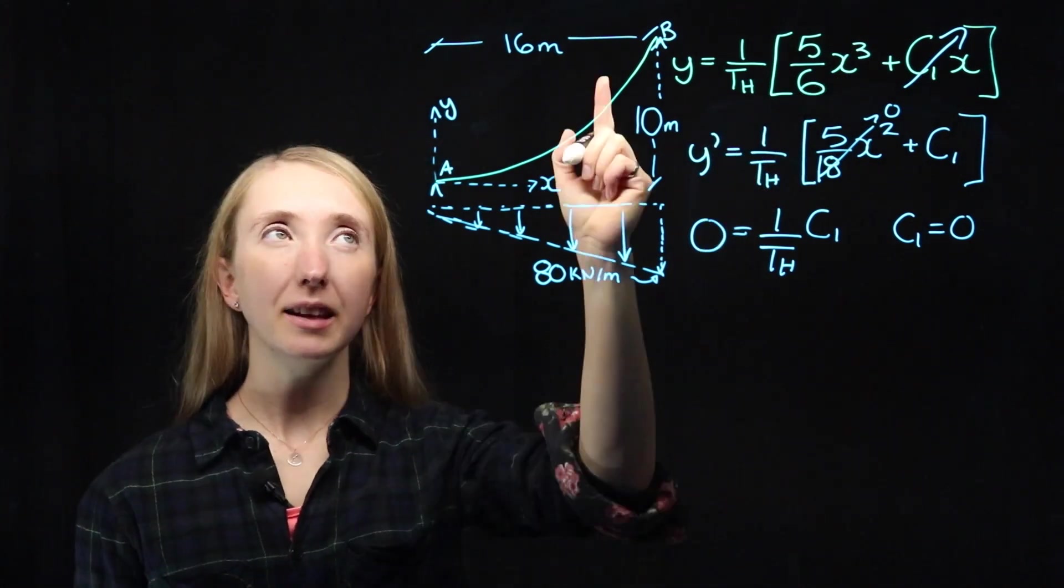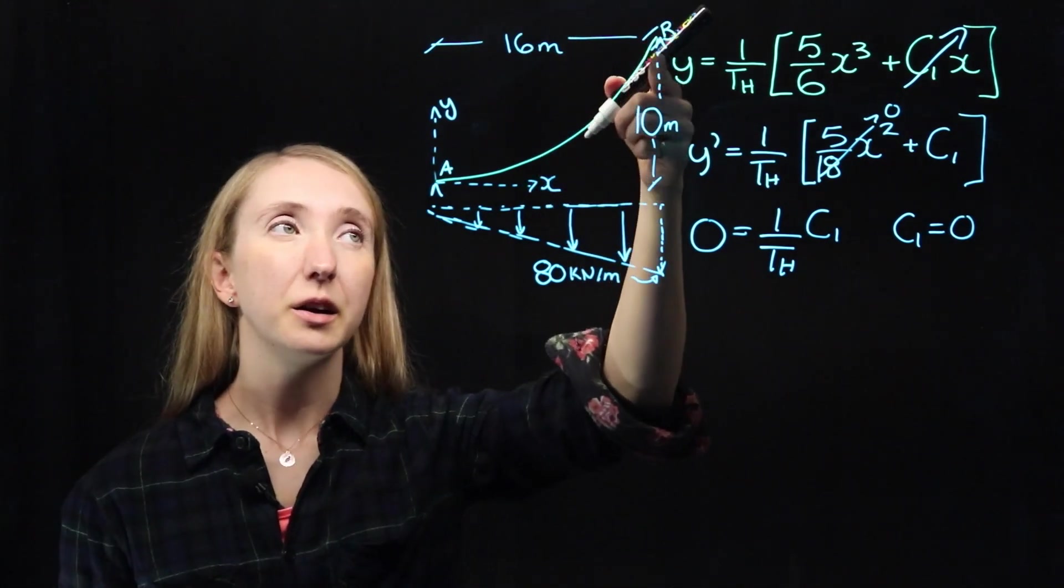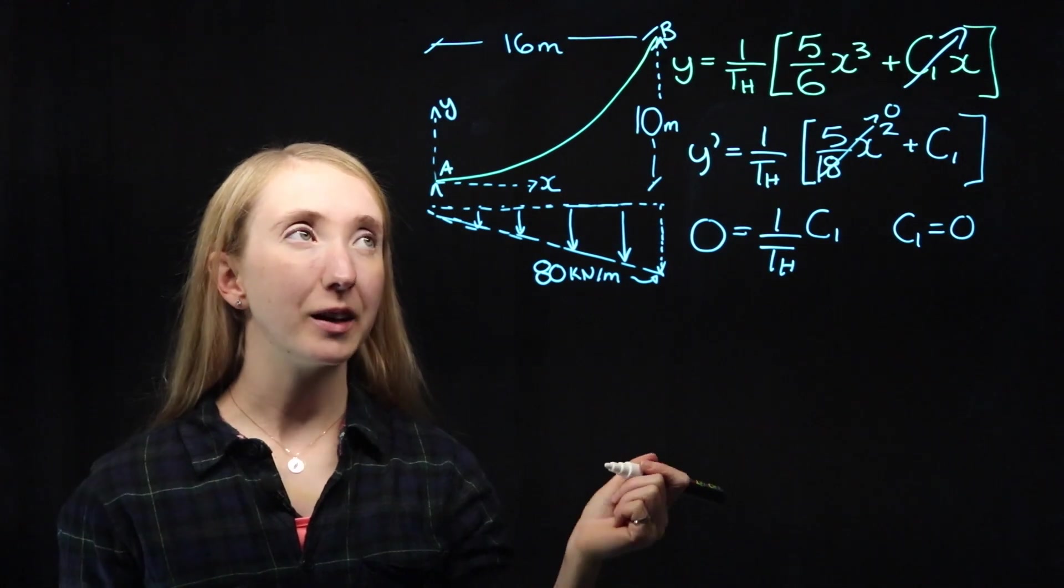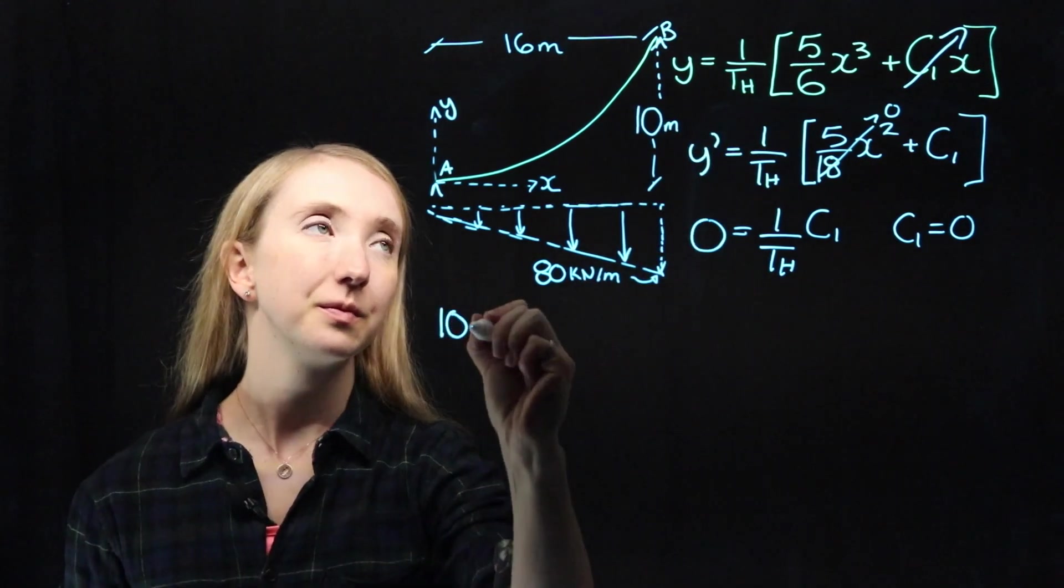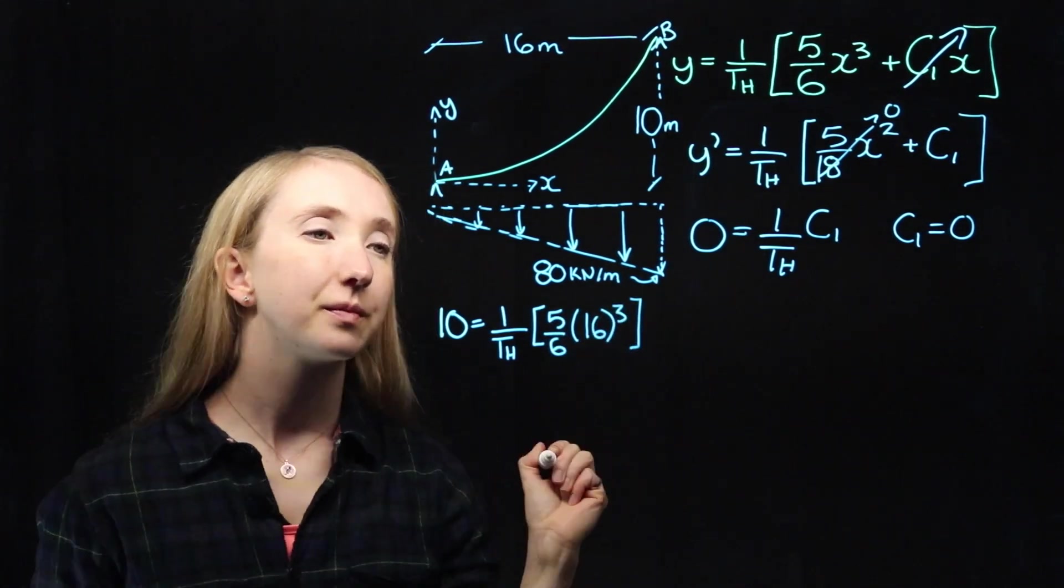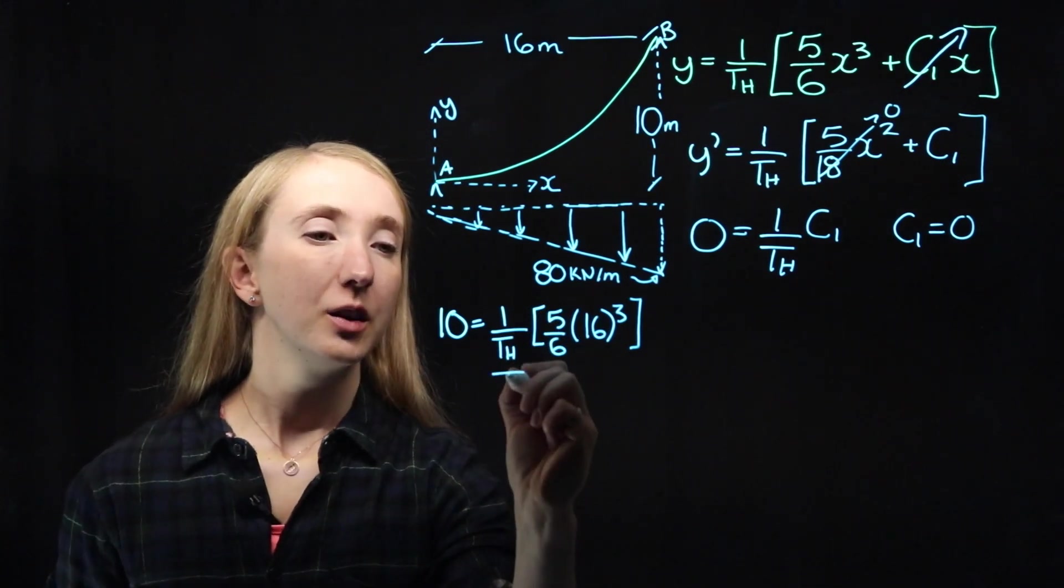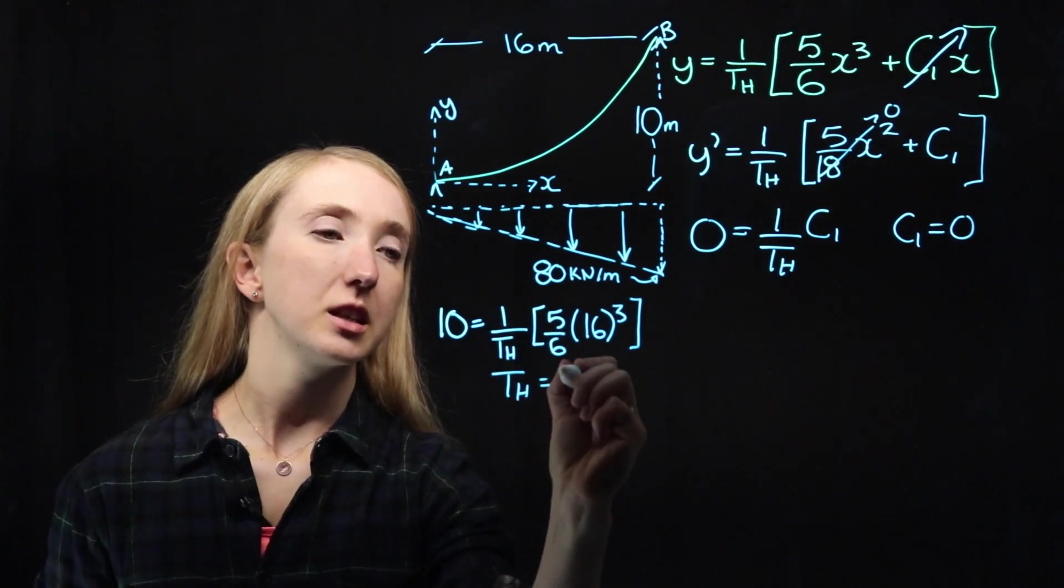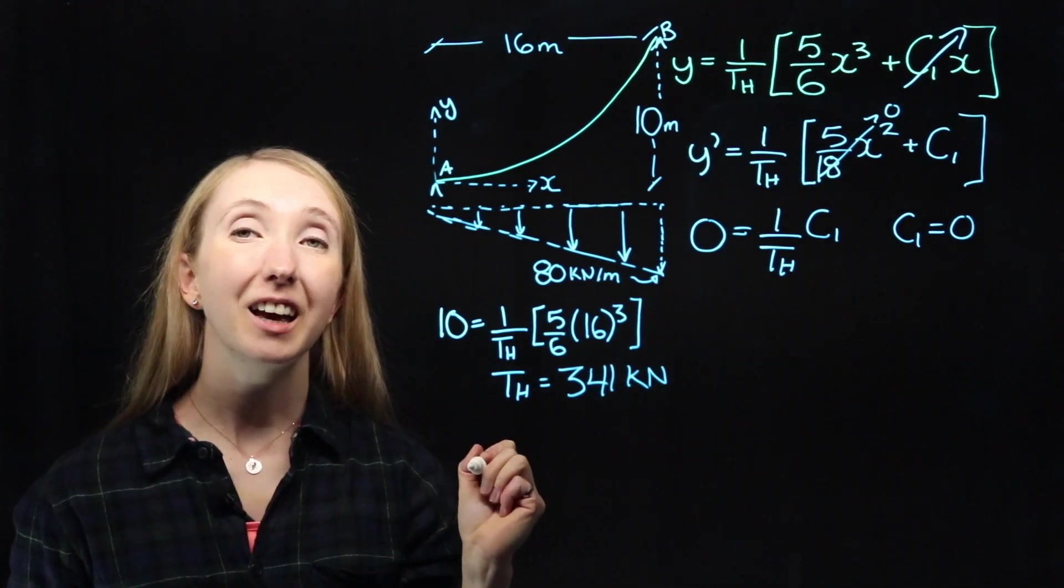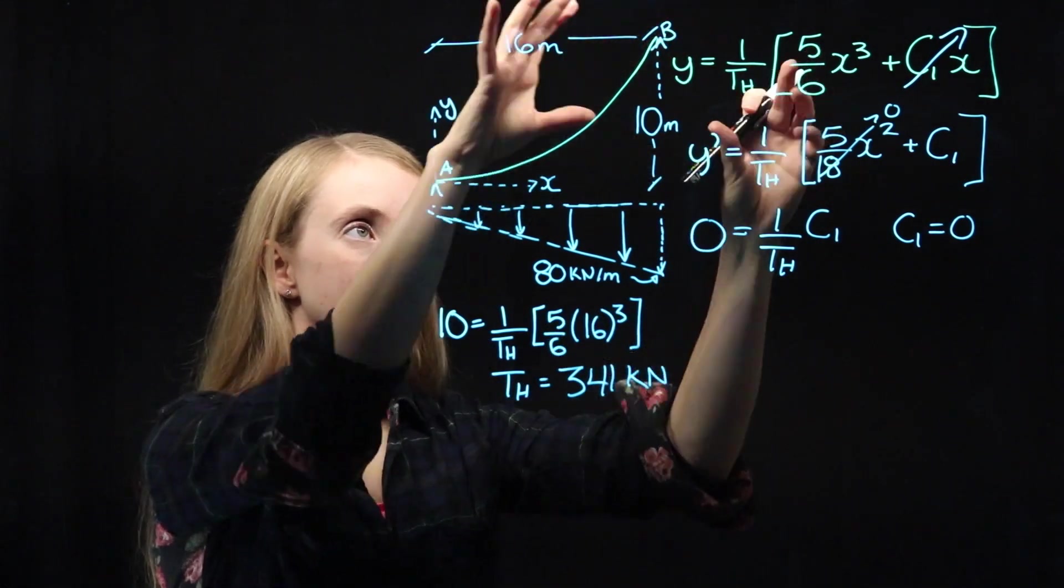Well, how about at the end? We know that our x is equal to 16, and our y is equal to 10. So we can plug those values into this equation. Then rearrange this and solve for TH, which will give us a nice answer of 341 kilonewtons.